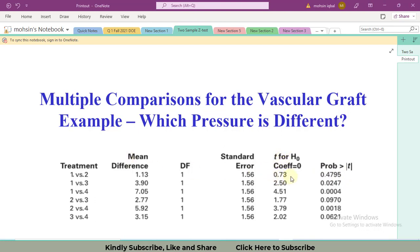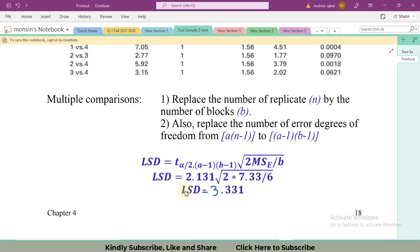After calculating the test statistic of LSD, the formula is t alpha by 2. Alpha is 0.05, and we have four levels so it becomes 3. B is 6, so 6 minus 1 equals 5. In short, we have to find the value of alpha 0.025 comma 15 in the table.